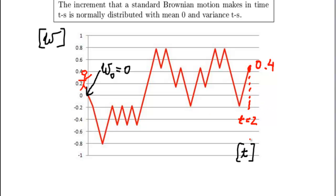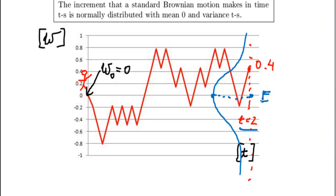On other realisations, Brownian motion can end up in many different places — it can pretty much take a range of values. The good news, however, is that I will know what the expected value is. This is the distribution of Brownian motion at time equal 2, and I will know what the centre of the distribution is, i.e., what the expected value of this distribution is. The expected value of W at time 2 equals 0. Whether I look at the Brownian motion at various points, the expectation of Brownian motion at all these points is 0.